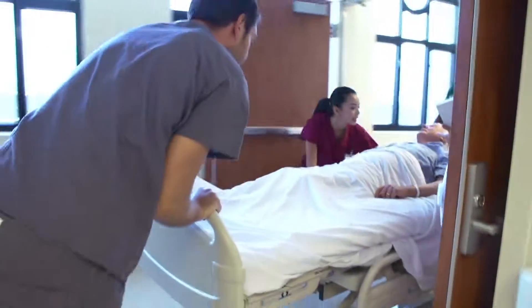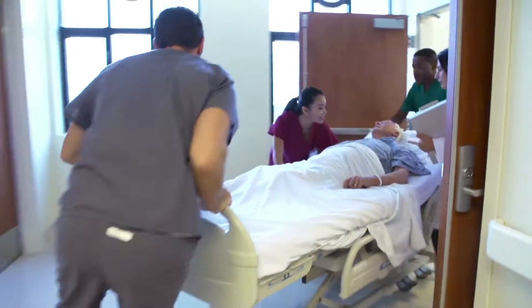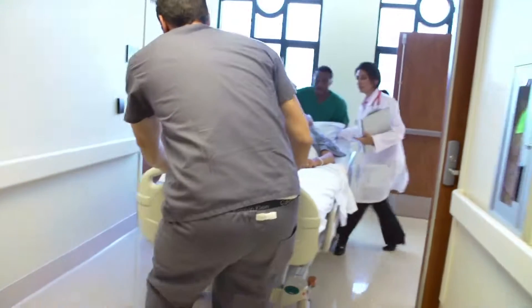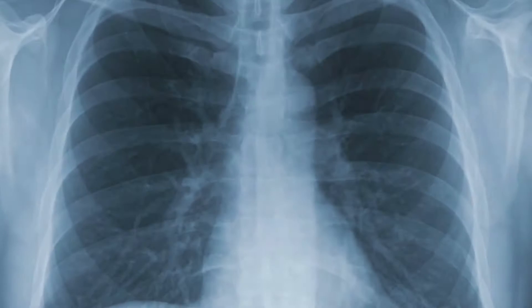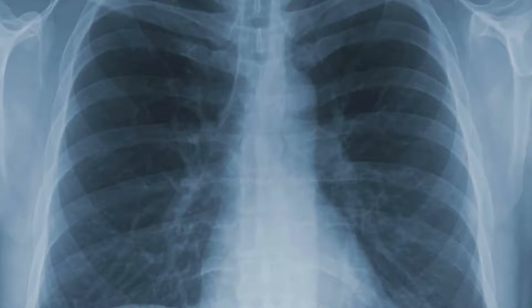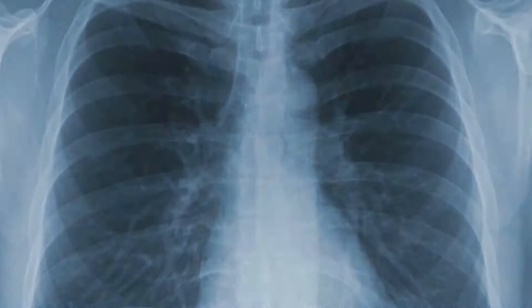A collection of blood in the pleural space is known as hemothorax. When there is no trauma, a spontaneous pneumothorax can occur. Air enters the pleural space when a tiny bleb on the lung ruptures.